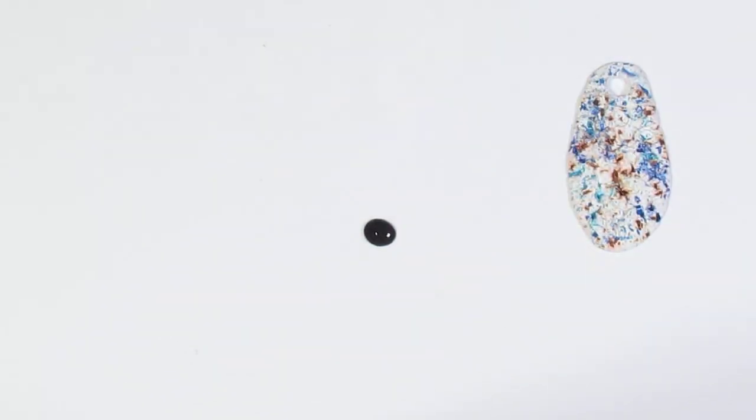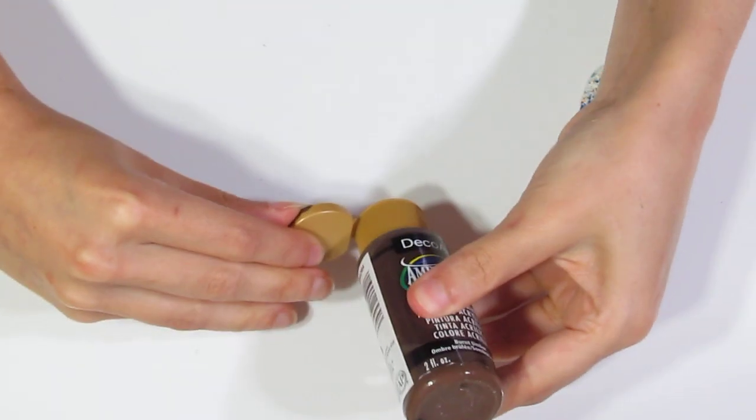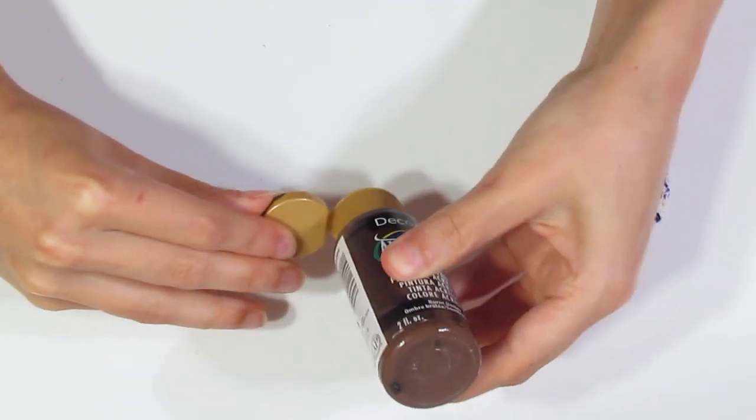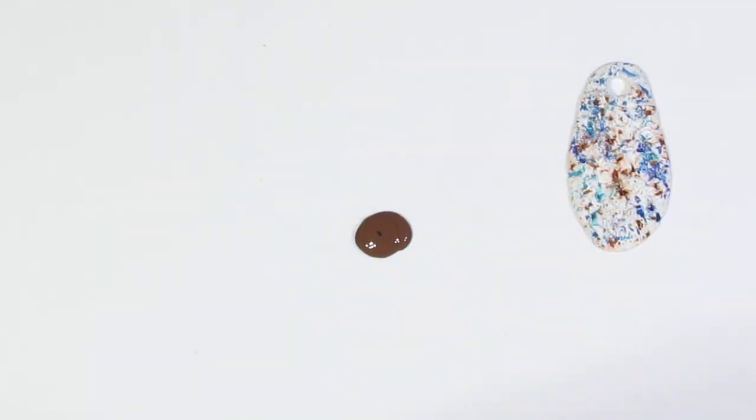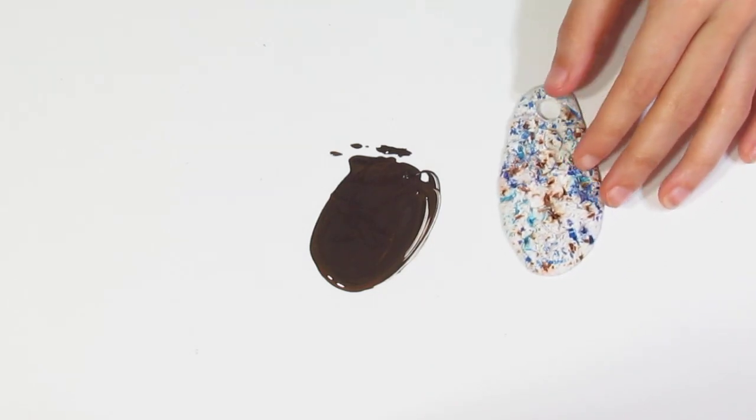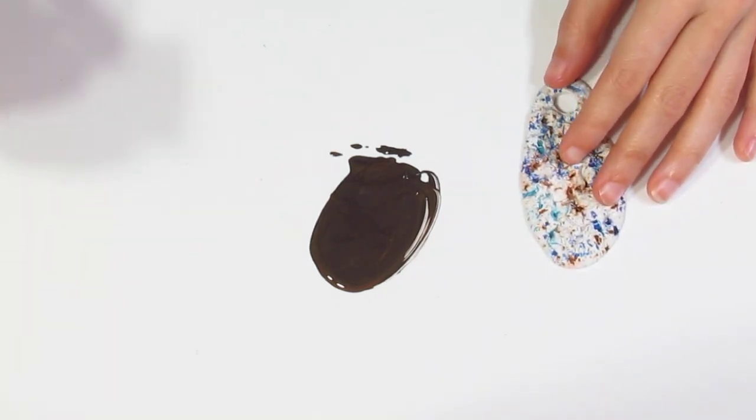I'll just squeeze a bit of that out. Then I will bring over some burnt umber. And I'll probably put in twice as much there. Then mix that together. Now I'm going to take a makeup sponge.